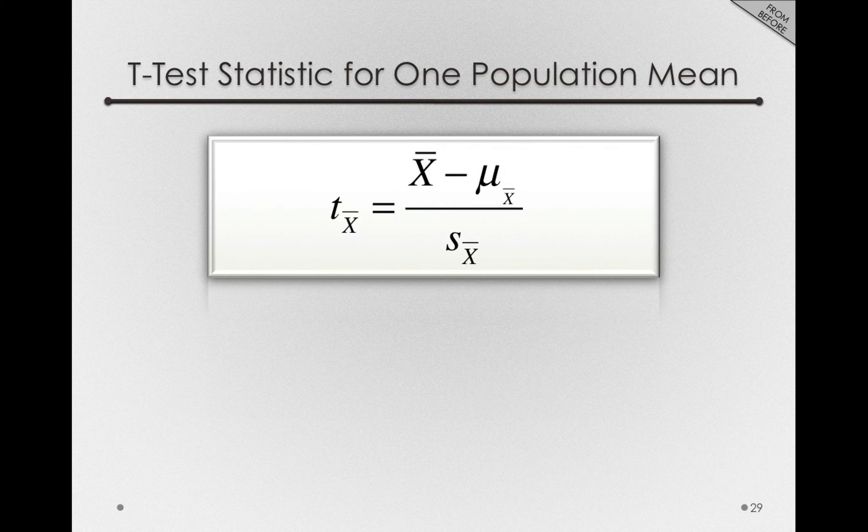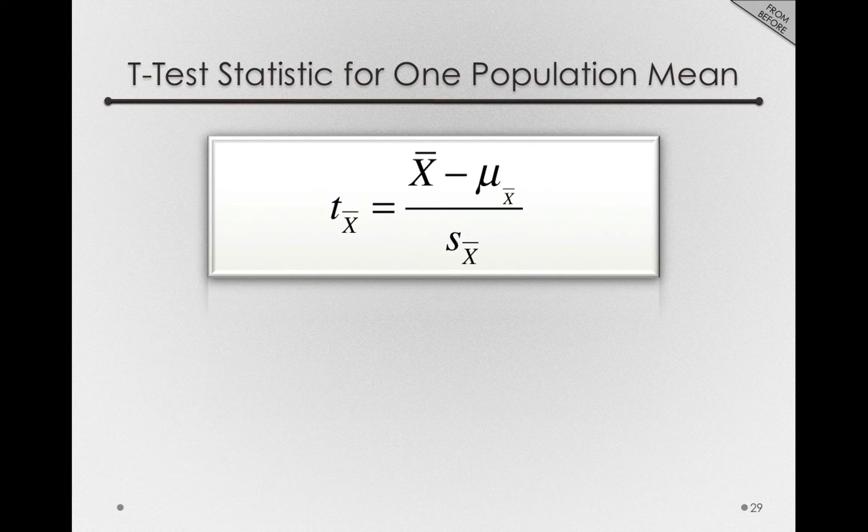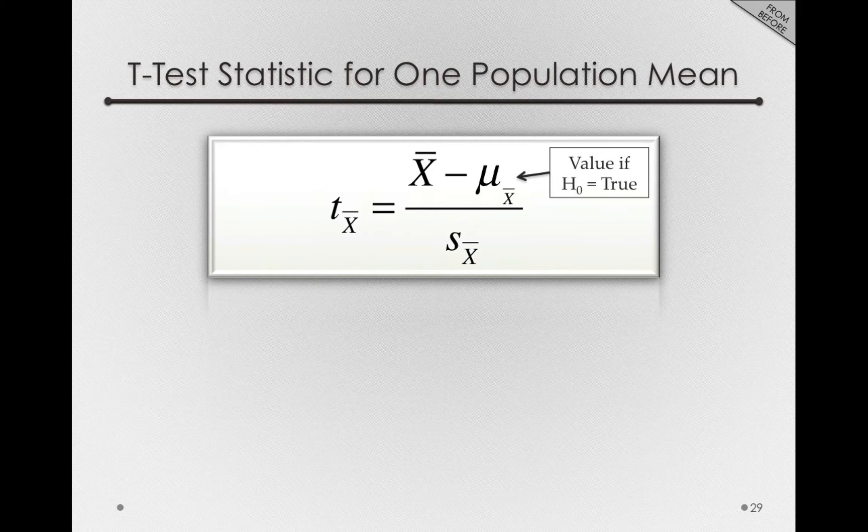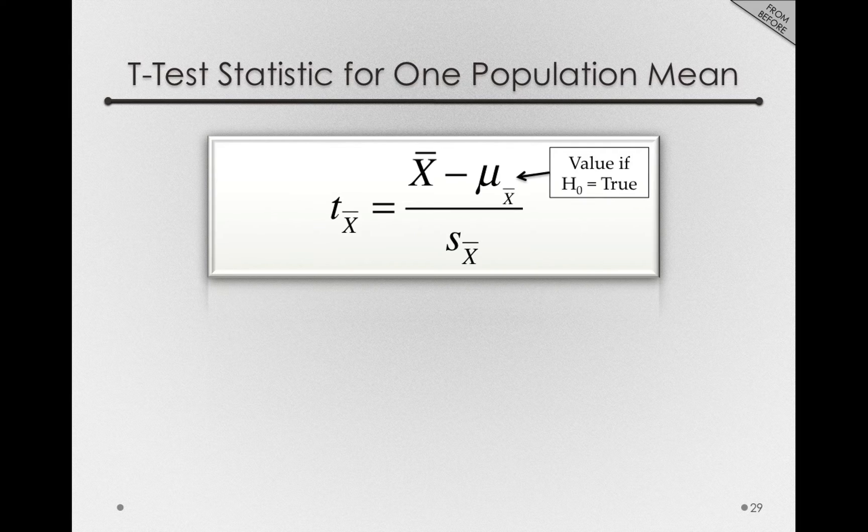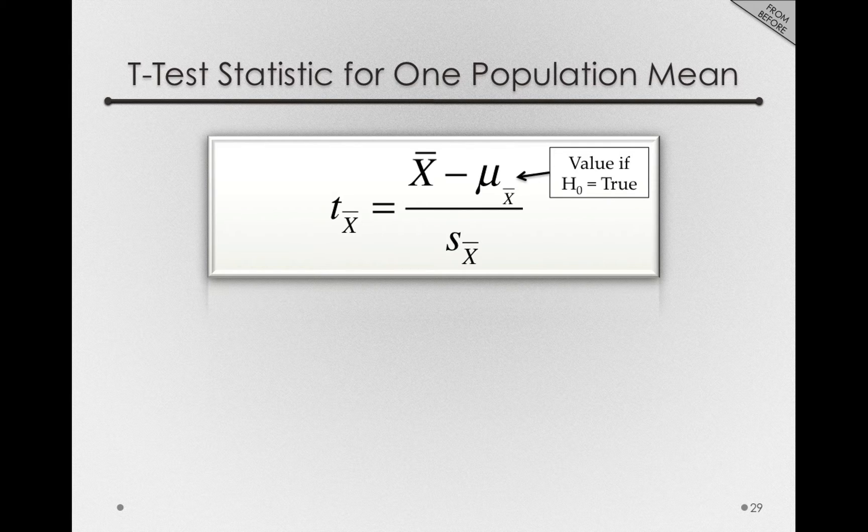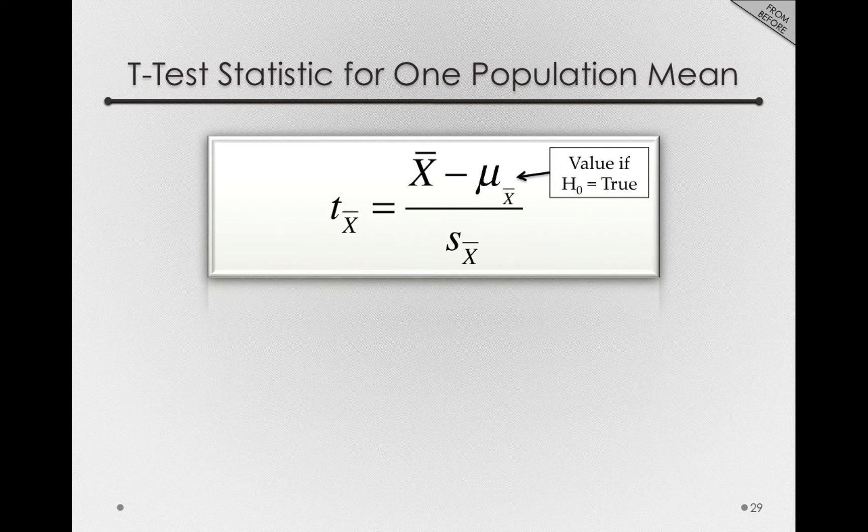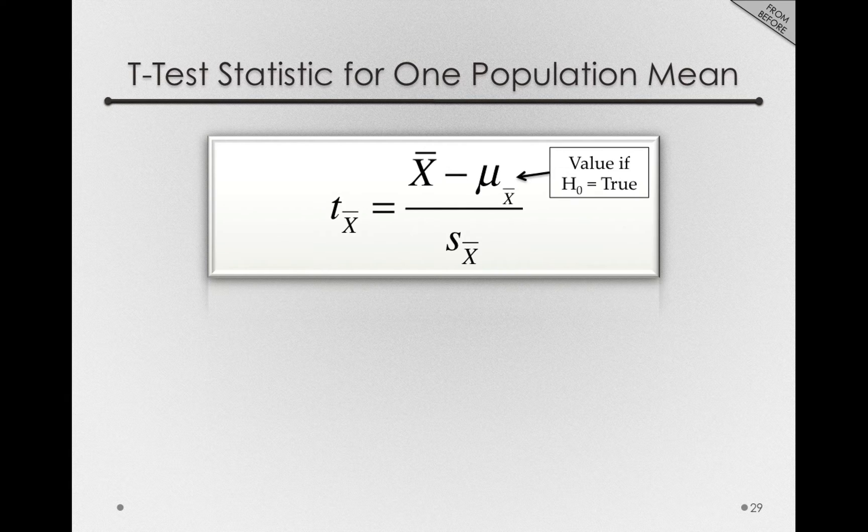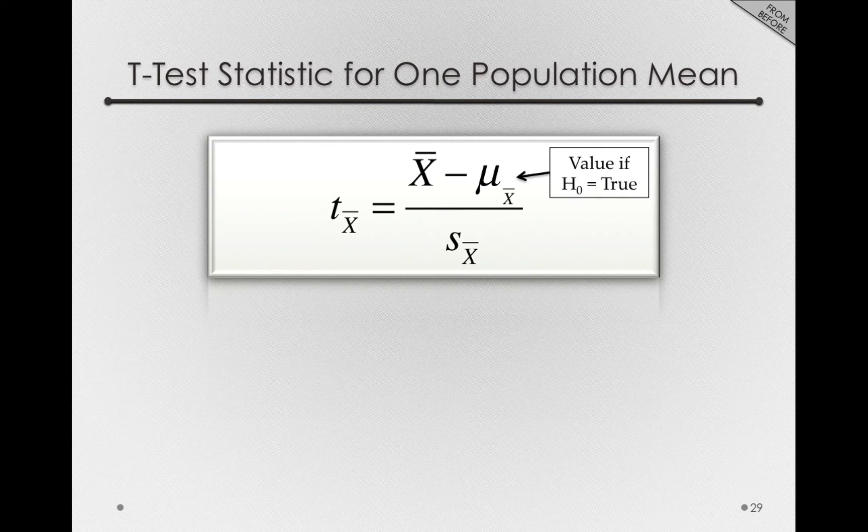When we had a t-test for a one population mean, it was simply x-bar minus the population mean if the null hypothesis were to be true, divided by the estimated standard error. This formed a t-test which allowed us to reference the observed value of t against the t-distribution.